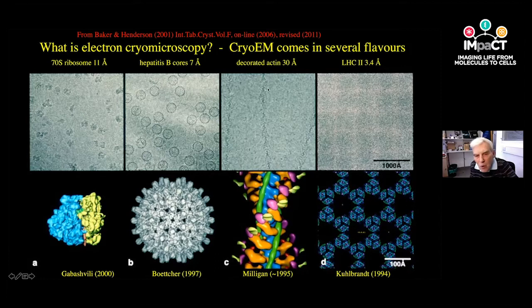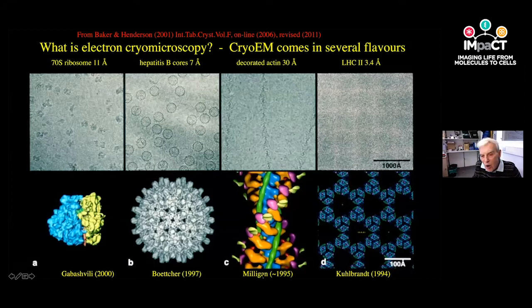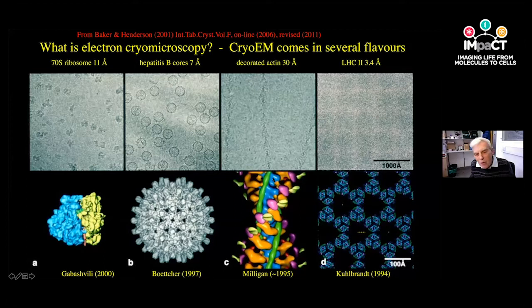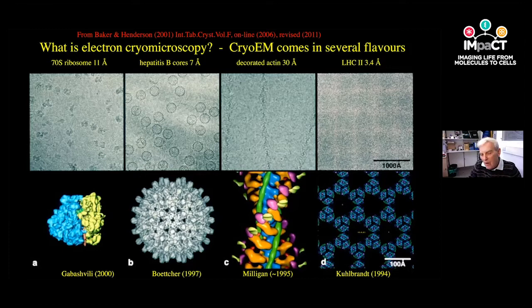The third panel shows a helically arranged structure — thin filaments from muscle, where actin and myosin filaments slide past one another. Ron's group did a difference map approach using cryo-EM images. The blue shading came from pure actin, green is tropomyosin, and pink, orange, and yellow are different domains of the myosin head group. Even at 30-ångström resolution in 1995, this really helped understanding of how muscle works.